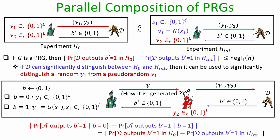The distinguishing advantage of algorithm A equals the distinguishing advantage of D between H0 and H_int. If D can significantly distinguish H0 from H_int, then A can significantly distinguish pseudo random samples from uniformly random samples - a contradiction since G is assumed to be a secure PRG. Therefore the distinguishing advantage of A is negligible, implying D's distinguishing advantage is also negligible, proving the first claim.